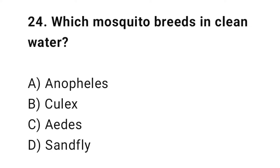Question number twenty-four: which mosquito breeds in clean stagnant water? The right answer is C — Aedes. Aedes breeds in clean stagnant water.